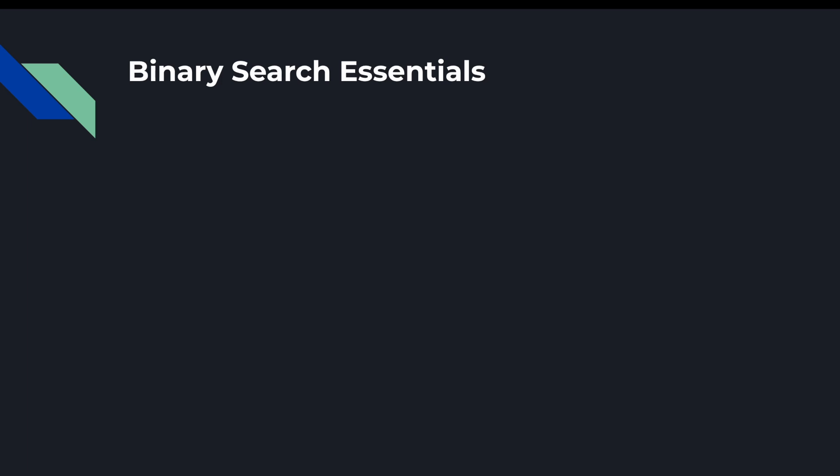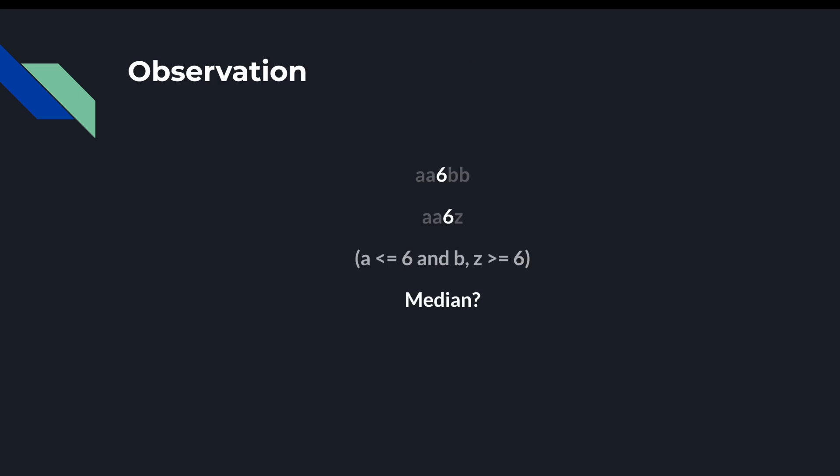In order to perform a binary search, we need to have well-defined conditions for termination, and we also need to know how and when we search based on our current guess. So let's take a stab at it. Let's say we have arrays like so. Can you safely determine the median in this case?